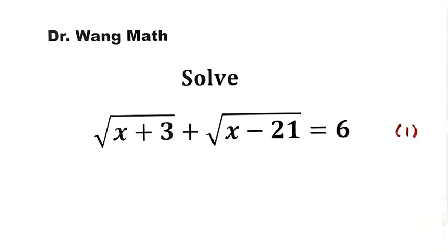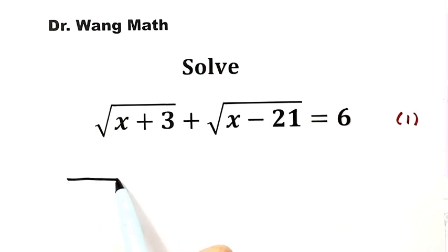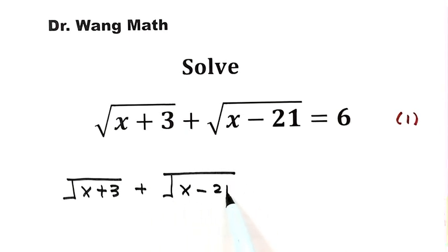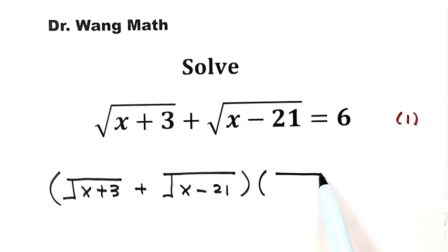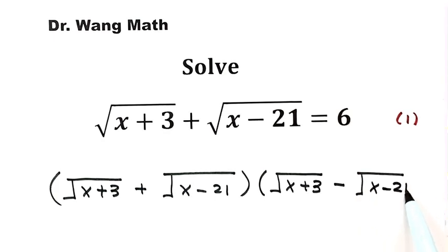So the first step, we are going to multiply by the conjugate on both sides. Let's write down the left hand side first. Here we have square root of x plus 3, plus square root of x minus 21. Since there's a plus, the conjugate just has a minus — square root of x plus 3, minus square root of x minus 21. Then the right hand side.